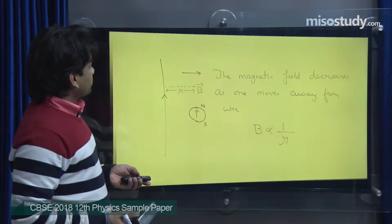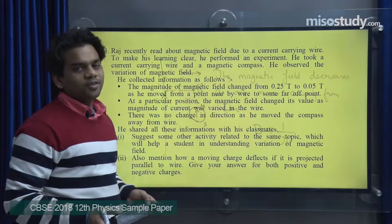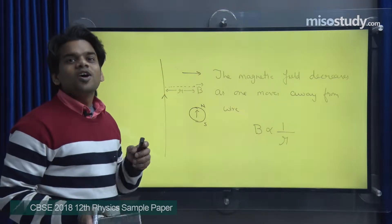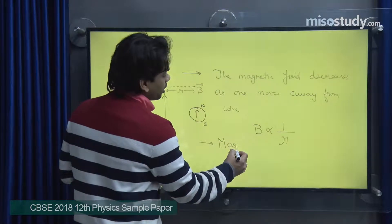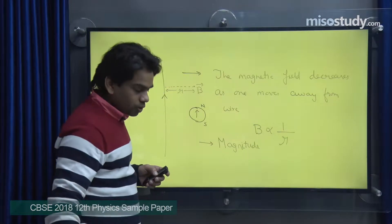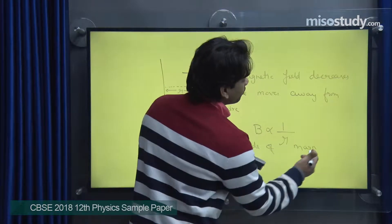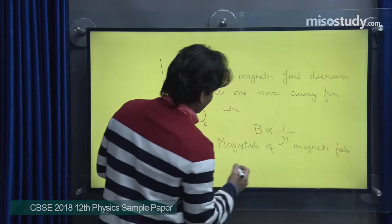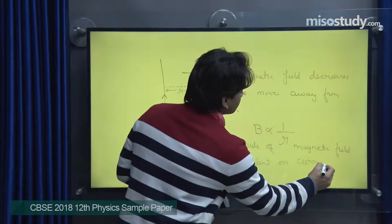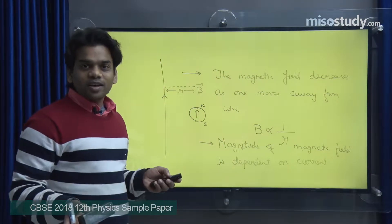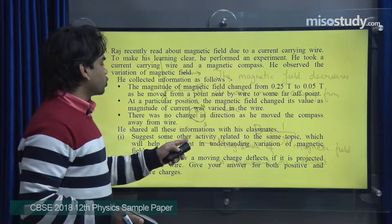For the second observation, at a particular position, the magnetic field changed its value as the magnitude of current was varied in the wire. It is not stated whether it increased or decreased, but it is clear that the magnitude of the magnetic field is dependent on the current through the current-carrying wire.